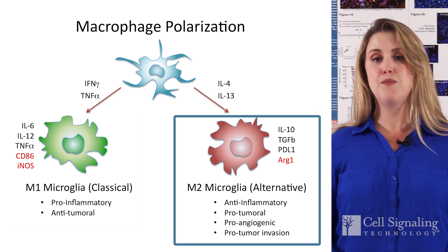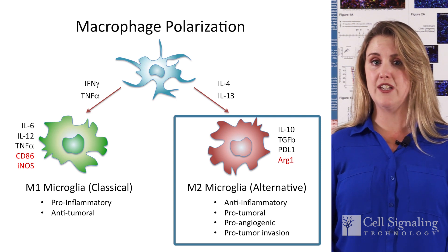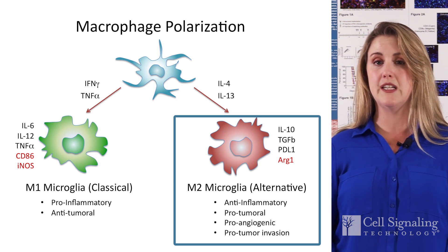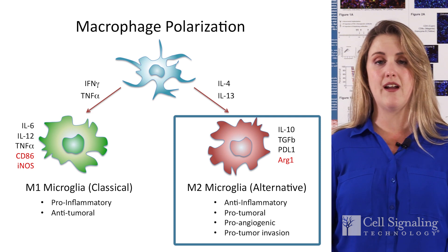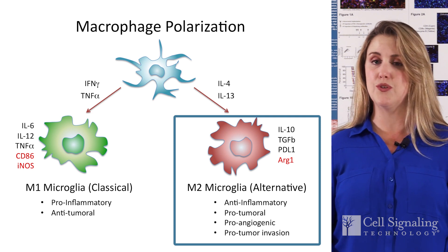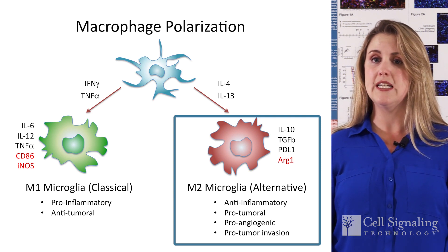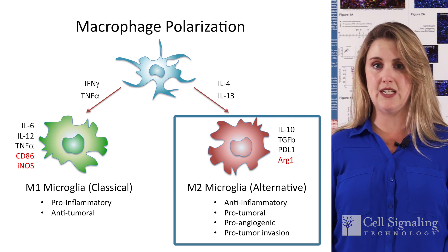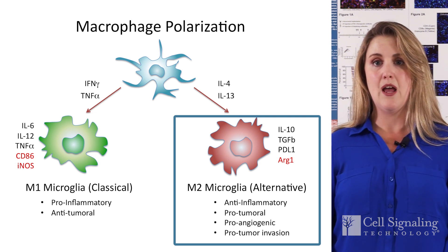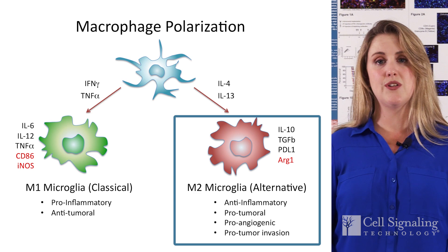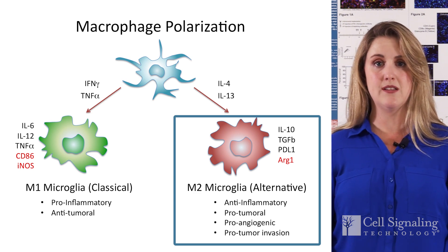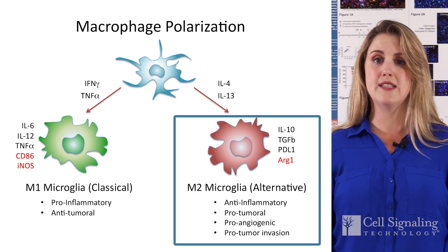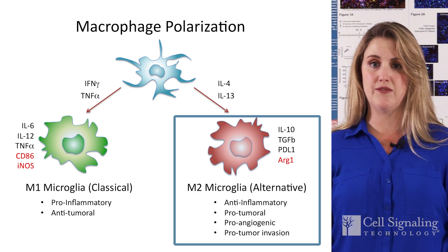M2-polarized macrophages, also known as alternatively activated macrophages, are activated by cytokines such as interleukin-4, -10, and -13. Most tumor-associated macrophages, or TAMs, are thought to resemble M2 macrophages.